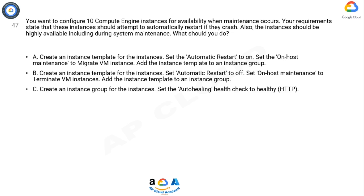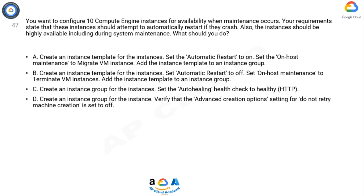Option C. Create an instance group for the instances. Set the auto-healing health check to healthy HTTP. Option D. Create an instance group for the instances. Verify that the advanced creation option setting for do not retry machine creation is set to off. Now take 10 seconds to think about the answer.